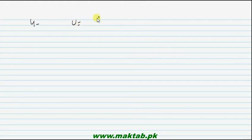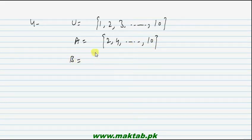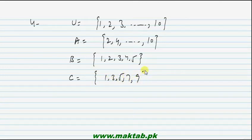Question number 4: let U equal {1, 2, 3, ... 10}. A set contains even numbers: {2, 4, 6, 8, 10}. B set contains the first 5 natural numbers: {1, 2, 3, 4, 5}. C set contains odd numbers: {1, 3, 5, 7, 9}. List the members of each of the following sets.